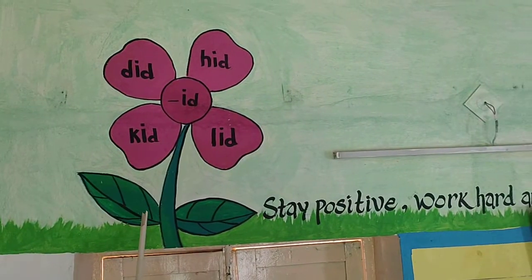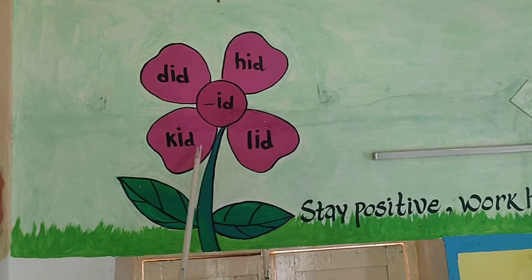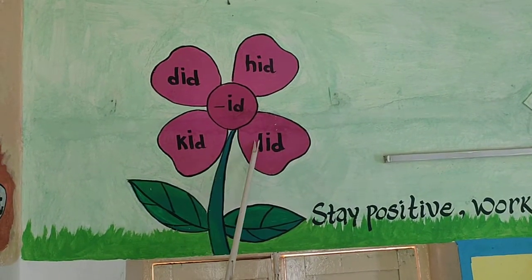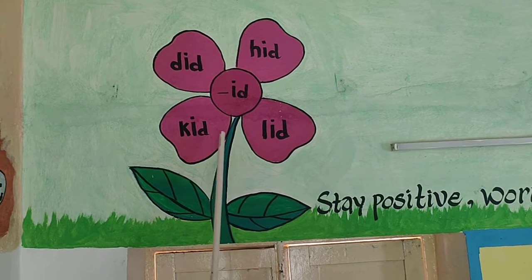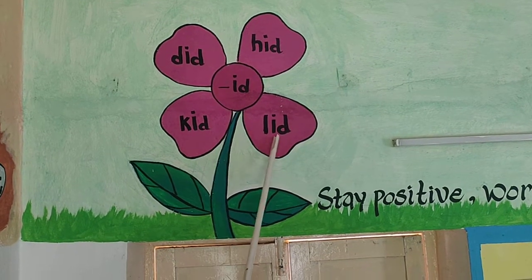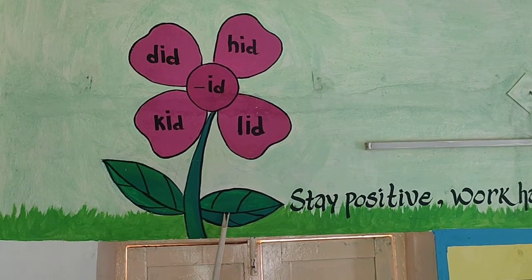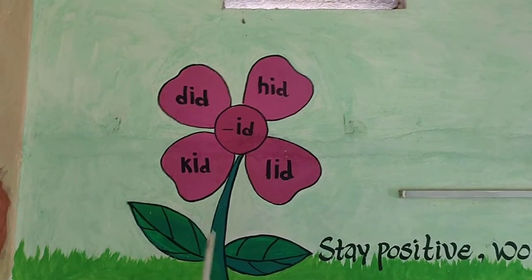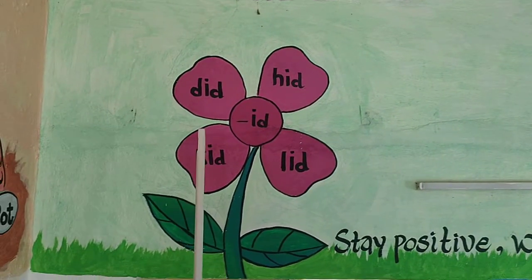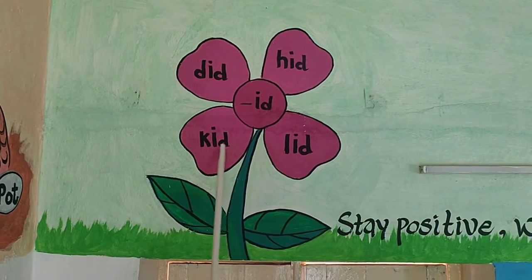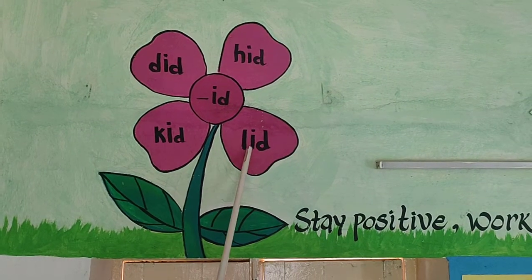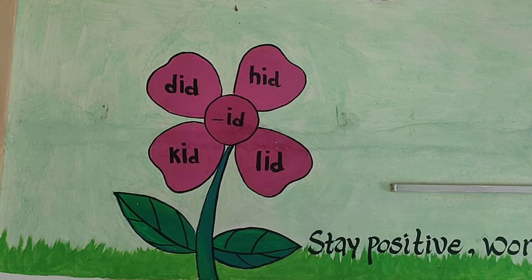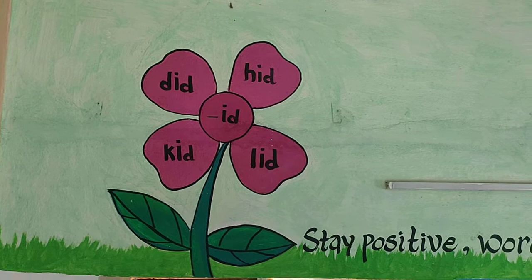Flower kada? In which colour? The flower is pink in colour. Pink colour loo ondhe kada? The leaves are green in colour. Leaves ee colour loo ondhe? Green colour loo ondhe. The letters are black in colour. Black colour loo ondhe.